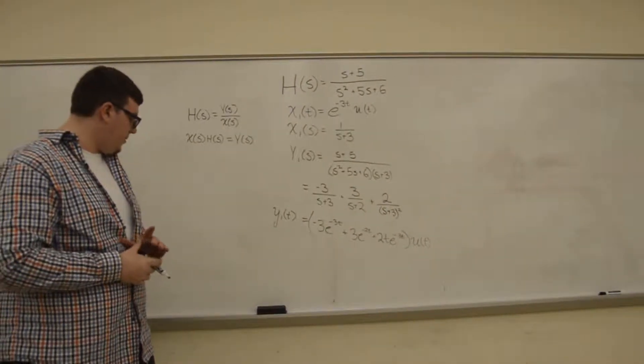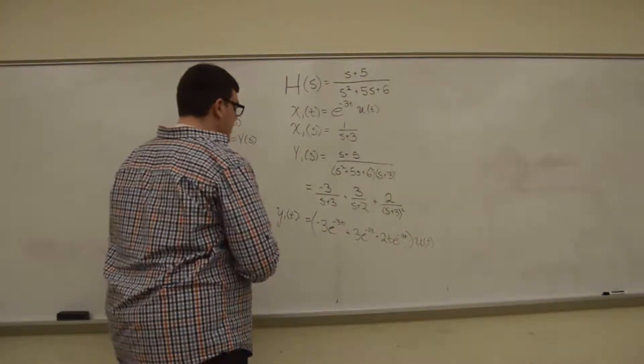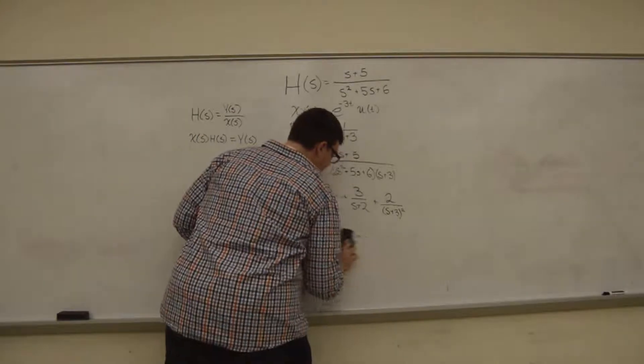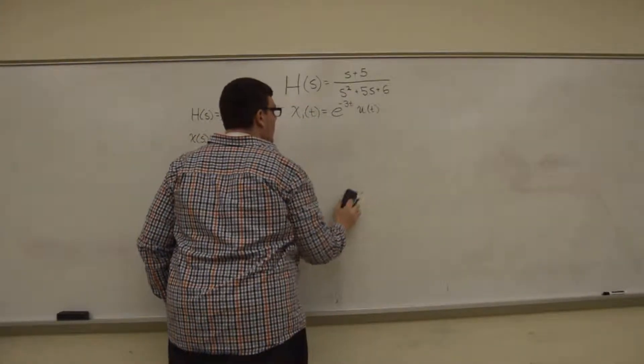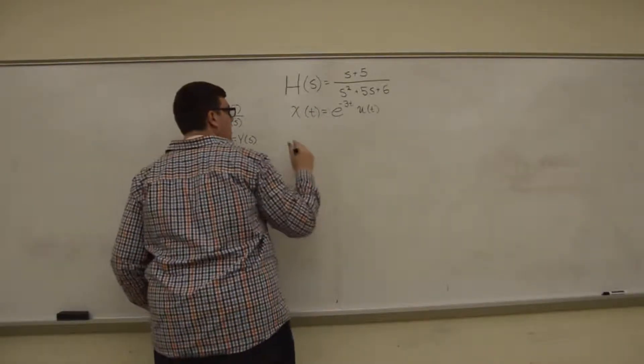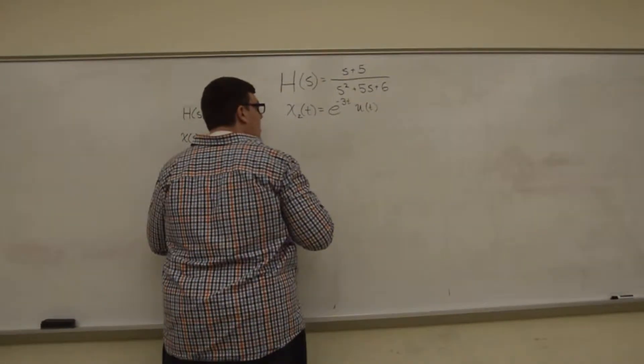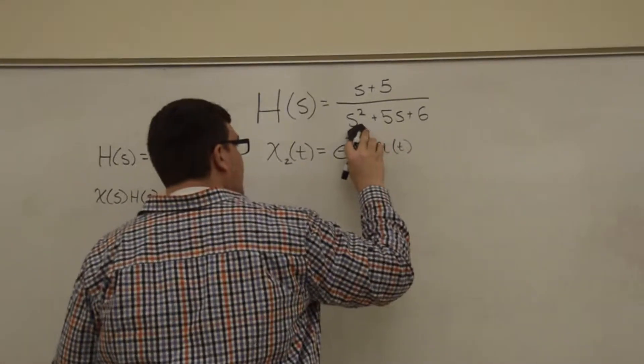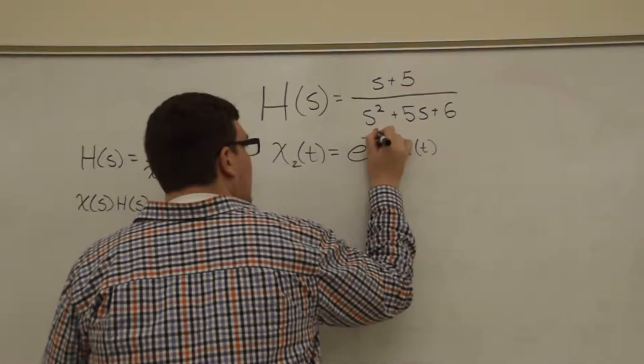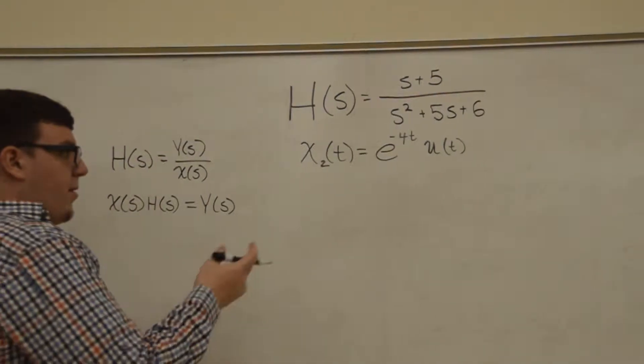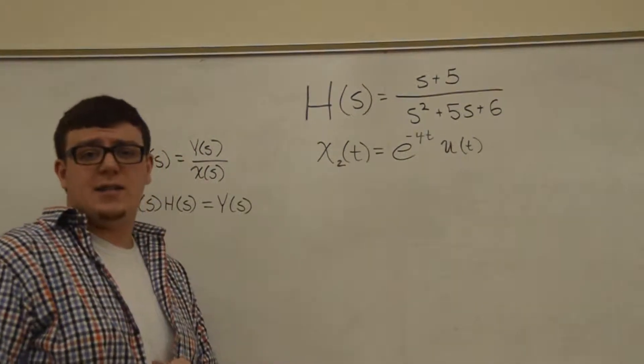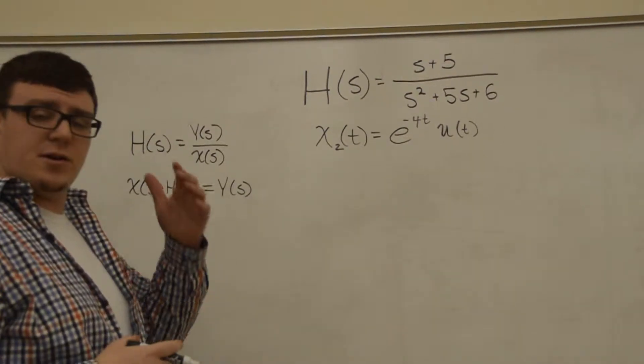So our next one is x₂(t), which was a very similar form, except that 3 is now a 4. So I'm going to go through this process a little bit faster because it's very similar to the previous one.